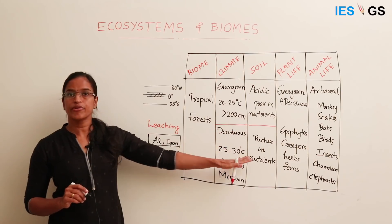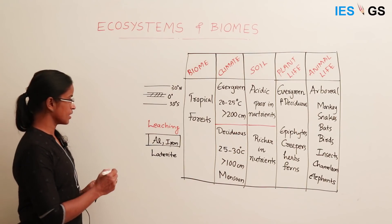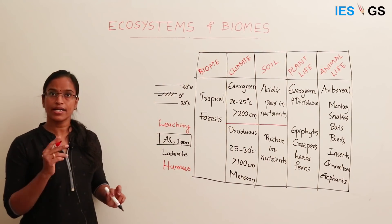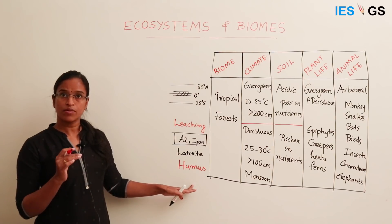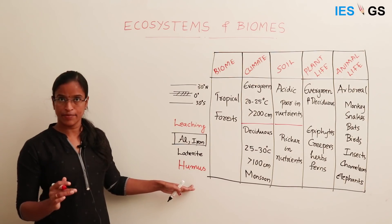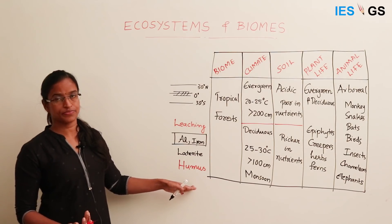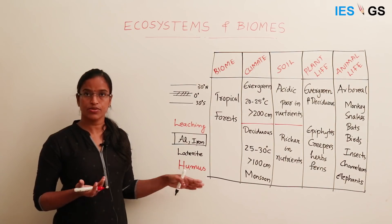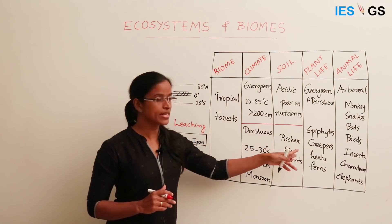Why doesn't this soil have nutrients despite higher diversity of plant life in this region? Because here the humus — which is partially decomposed organic matter in the soil — is decomposed very fast due to higher rates of microbial activity. Because of higher humidity and higher temperature, microbial activity is very high and all humus is decomposed very fast, so there are no stored nutrients in the soil. Comparatively, deciduous forests will be richer in nutrients.